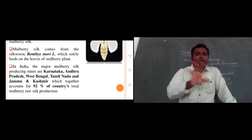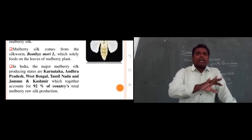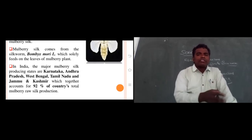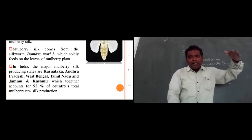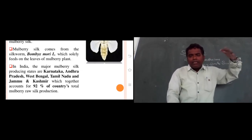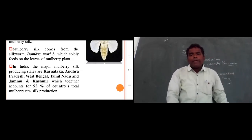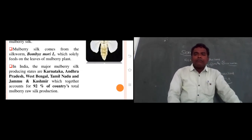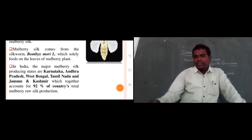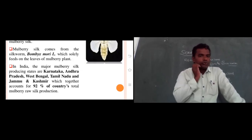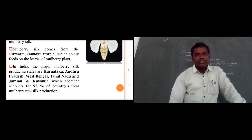In India, the major mulberry silk-producing states are Karnataka, Andhra Pradesh (including Telangana), West Bengal, Tamil Nadu, and Jammu & Kashmir. Famous silk products include Pochampalli pattu, Jamdhani pattu, Narayanpet, and Gadwal pattu. Together these states account for 92% of the country's total mulberry raw silk production.